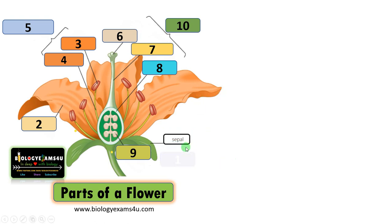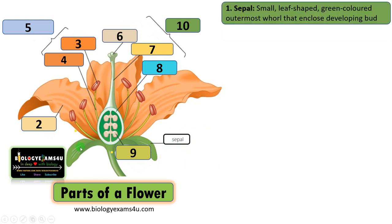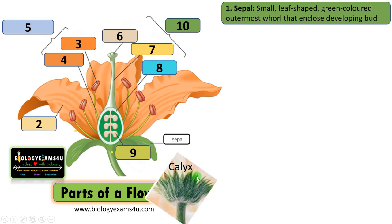The first whorl is called the sepal. Sepal is a small, leaf-shaped, often green-colored outermost whorl of the flower that encloses the developing bud. Group of sepals are called the calyx.